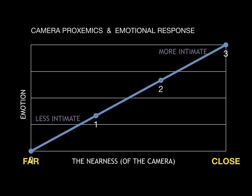In cinematography, there is a special relationship between camera proxemics and emotional response. Viewers tend to feel a greater emotional response to a character if the camera is closer to that subject. This graph shows that as you get closer to the subject, the intimacy between the character on screen and the audience is increased. If the camera moves back to a wide shot, there is a little more dramatic distance between subject and viewer.